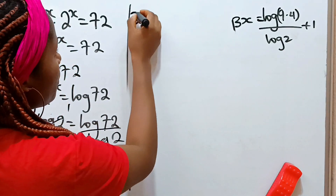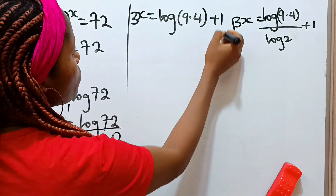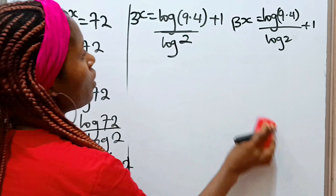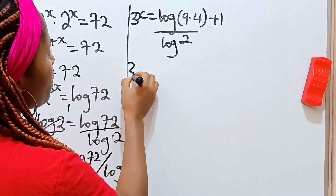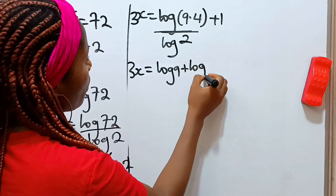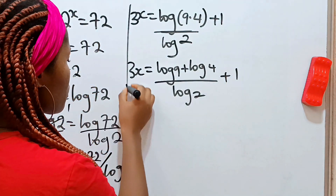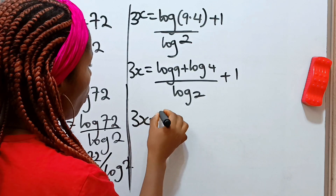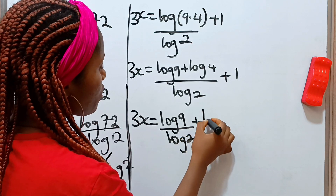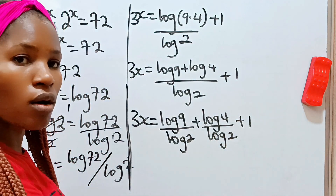So 3x is equal to log of 9 times 4, divided by log 2, plus 1. We can express this as log 9 plus log 4, all divided by log 2, plus 1. So 3x equals log 9 divided by log 2, plus log 4 divided by log 2, plus 1.